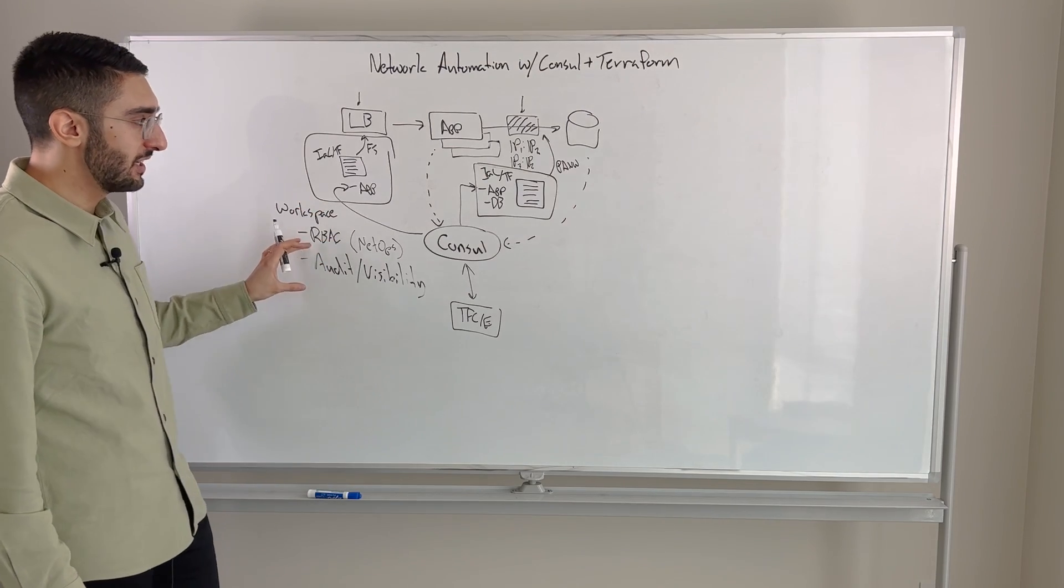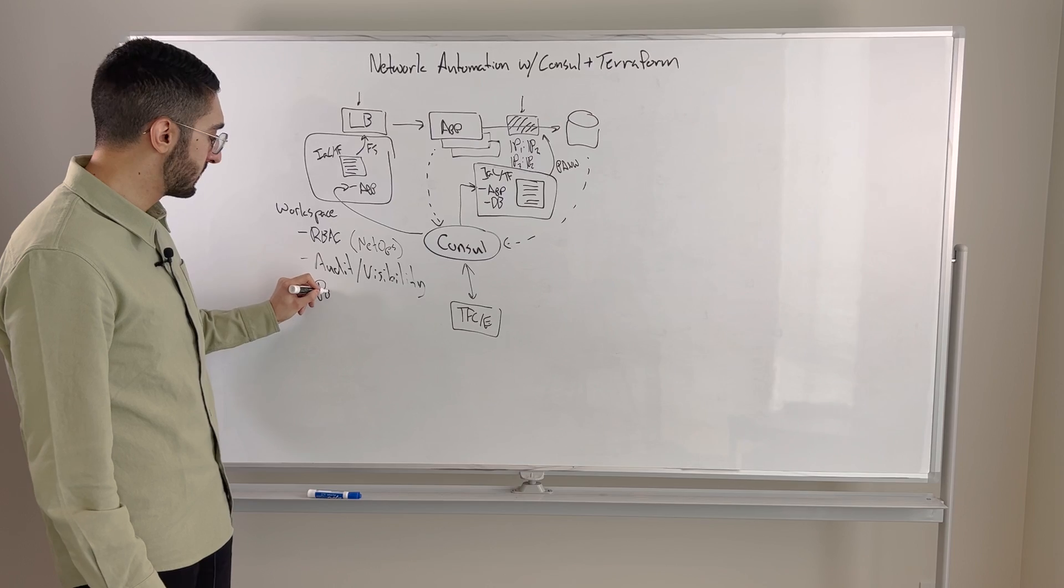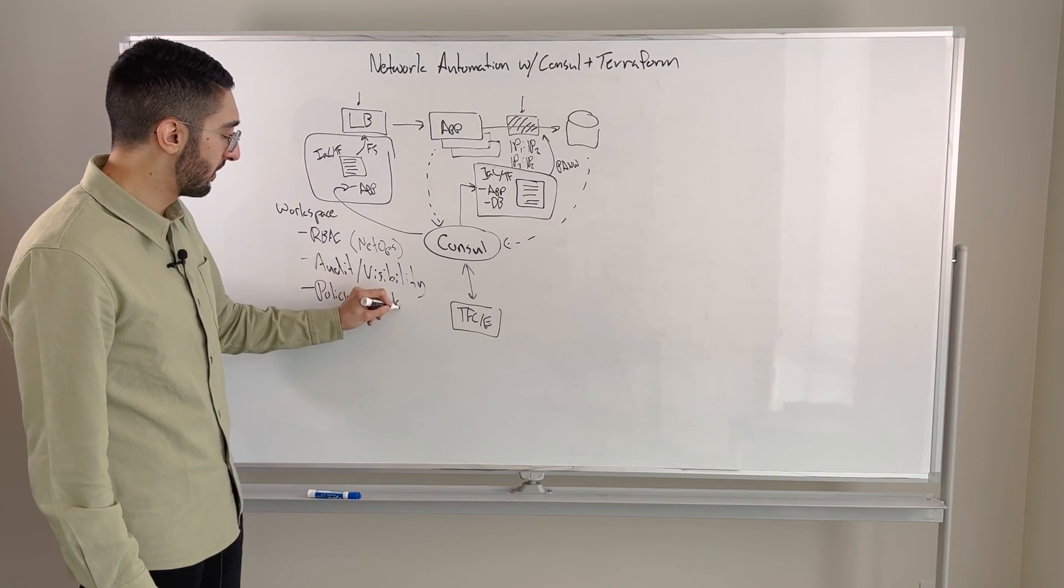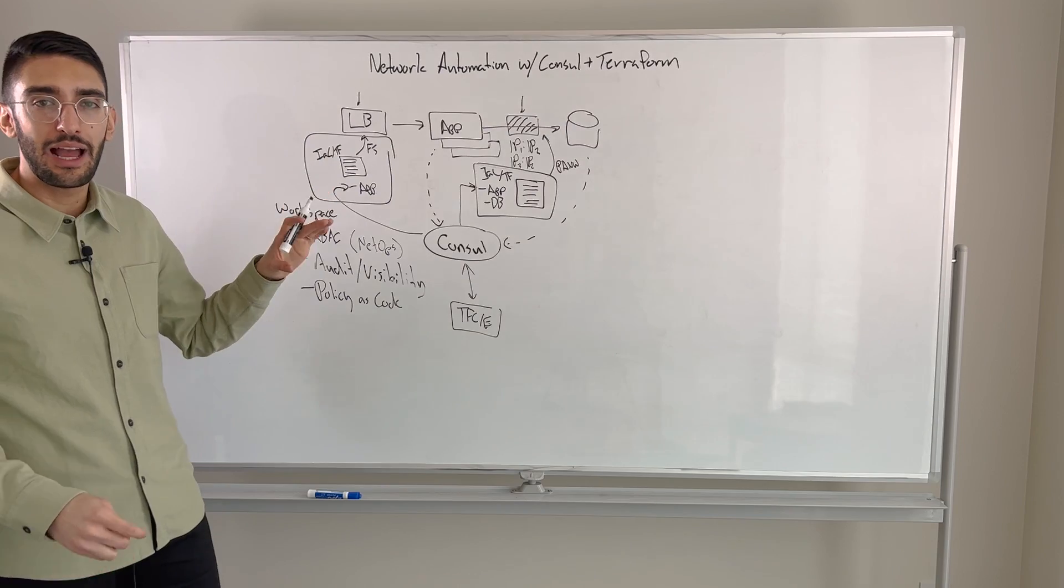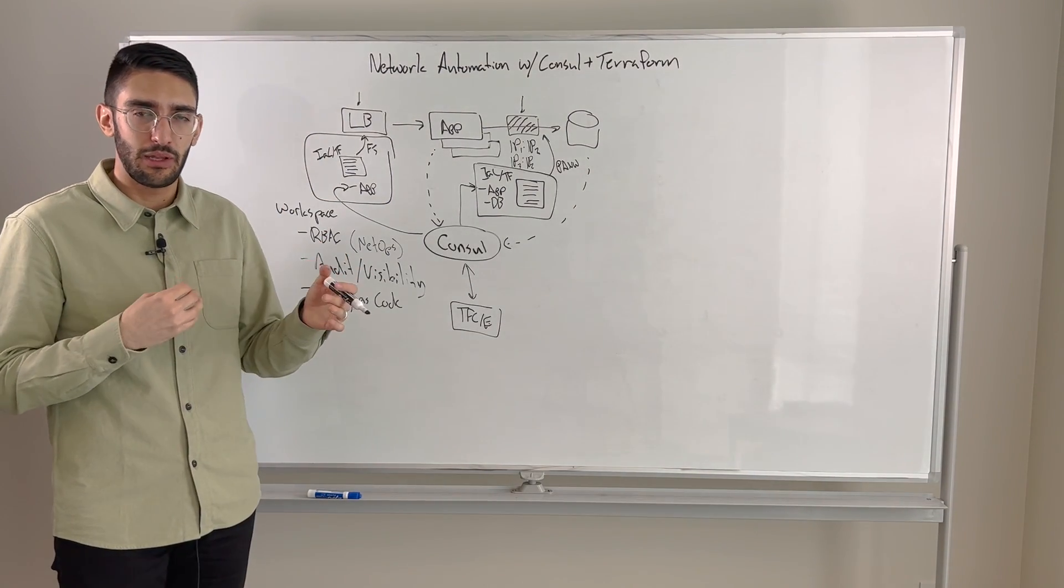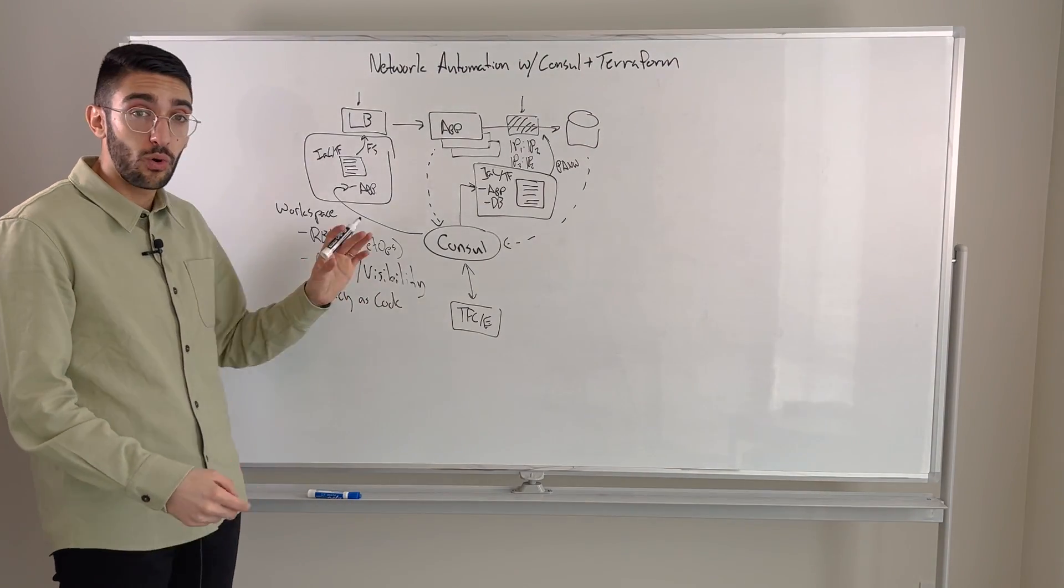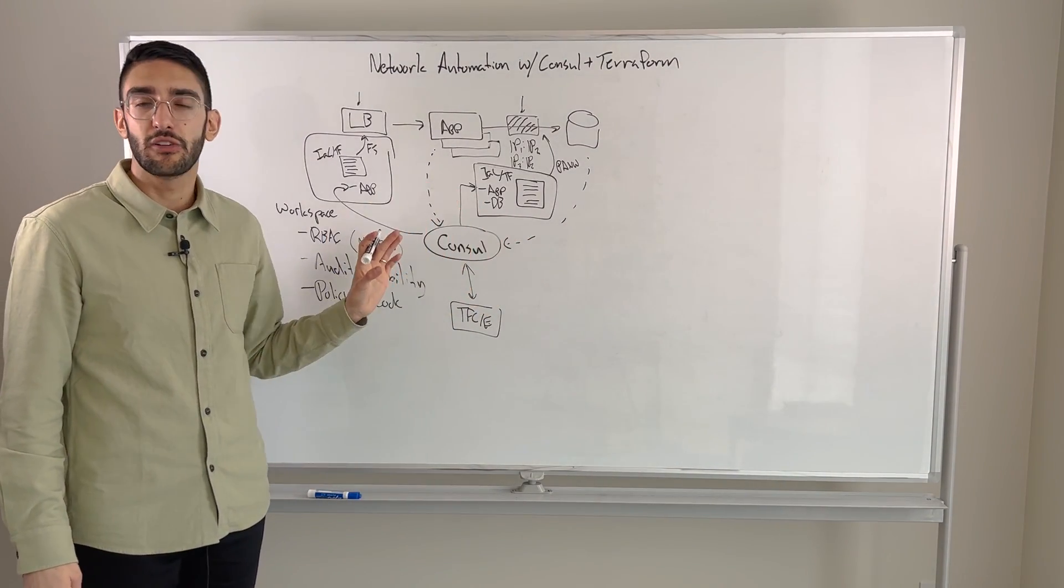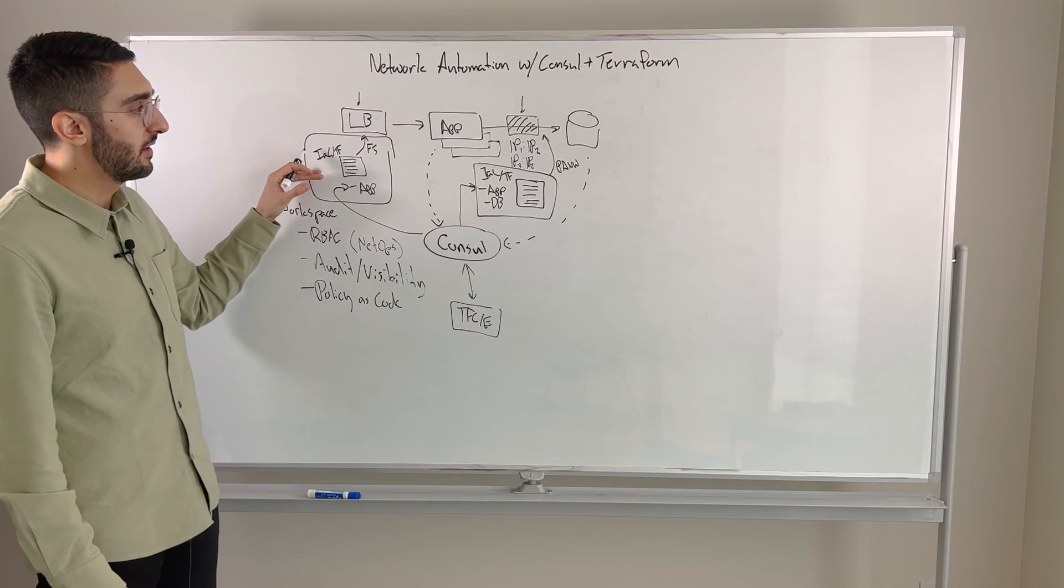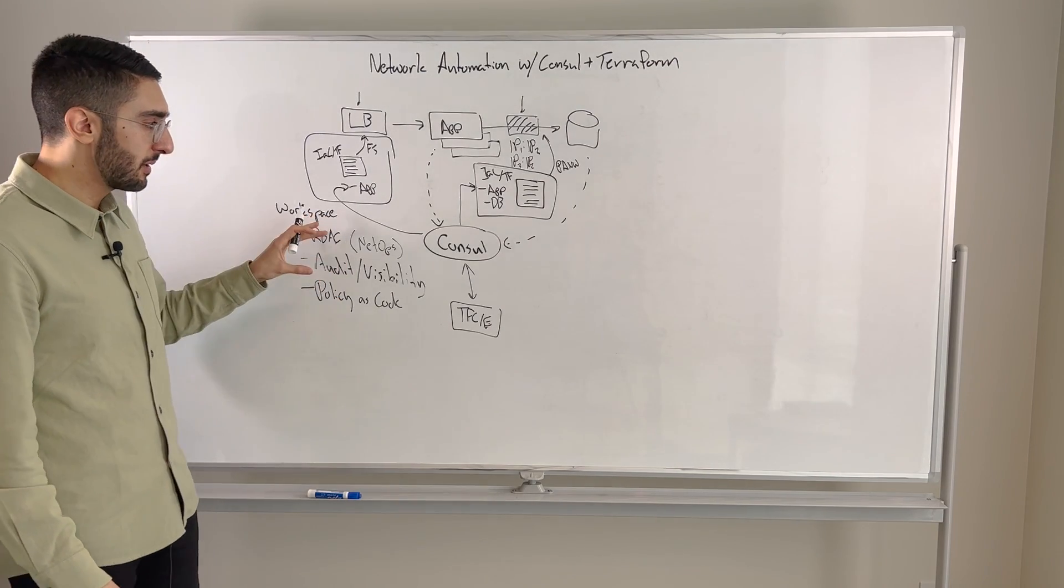Then lastly, we can actually use some of the same policy as code frameworks. So we can apply policy as code to put additional governance on top of this. So we might want to have an additional layer of policy checks in terms of, hey, is this a valid change that we're going to apply before that goes through? Much like we would apply policy as code to our normal infrastructure as code pipeline in terms of how we're making changes to our infrastructure. We can impose those same changes or same policies on how we're applying changes to the network as well. So this becomes key.